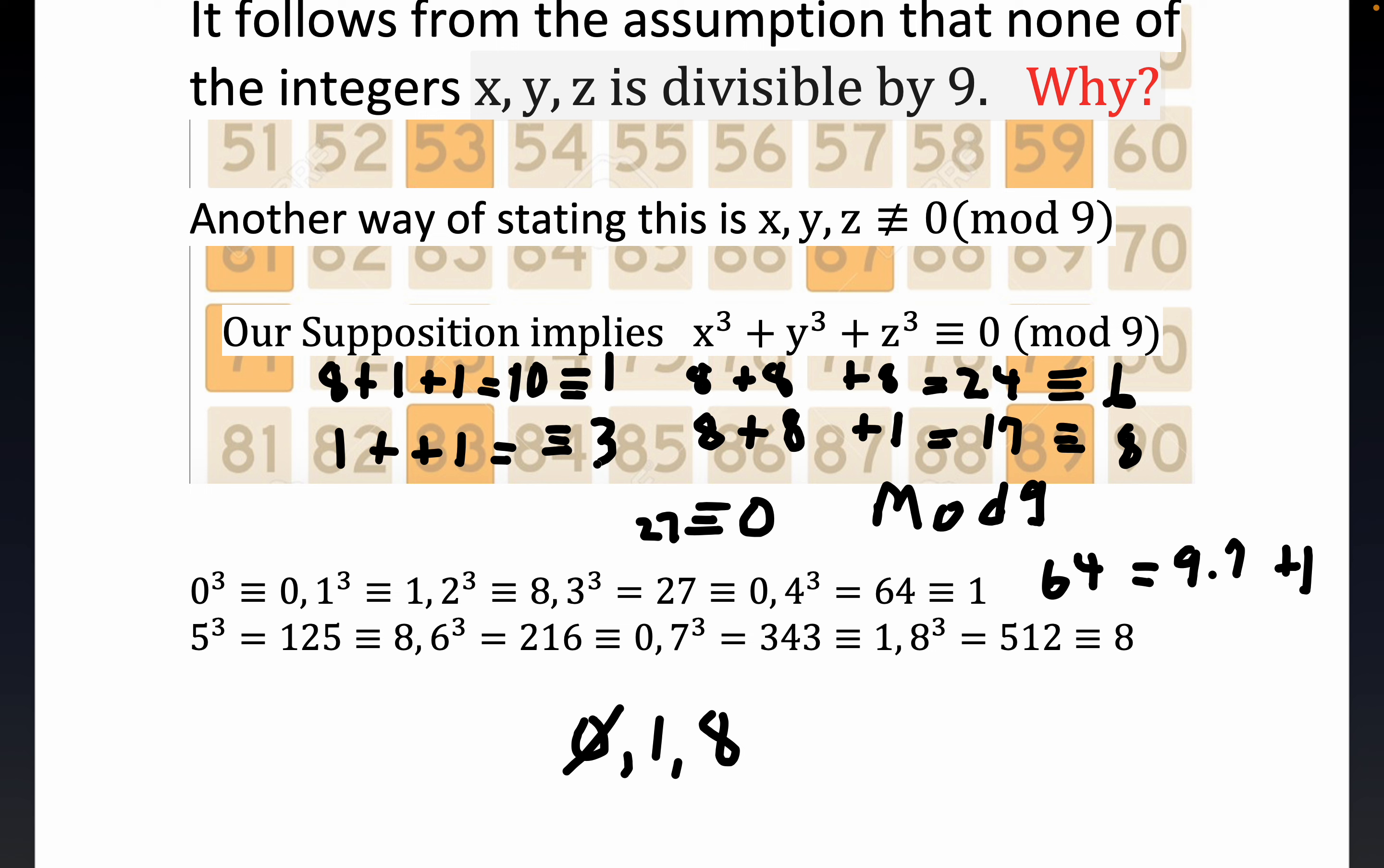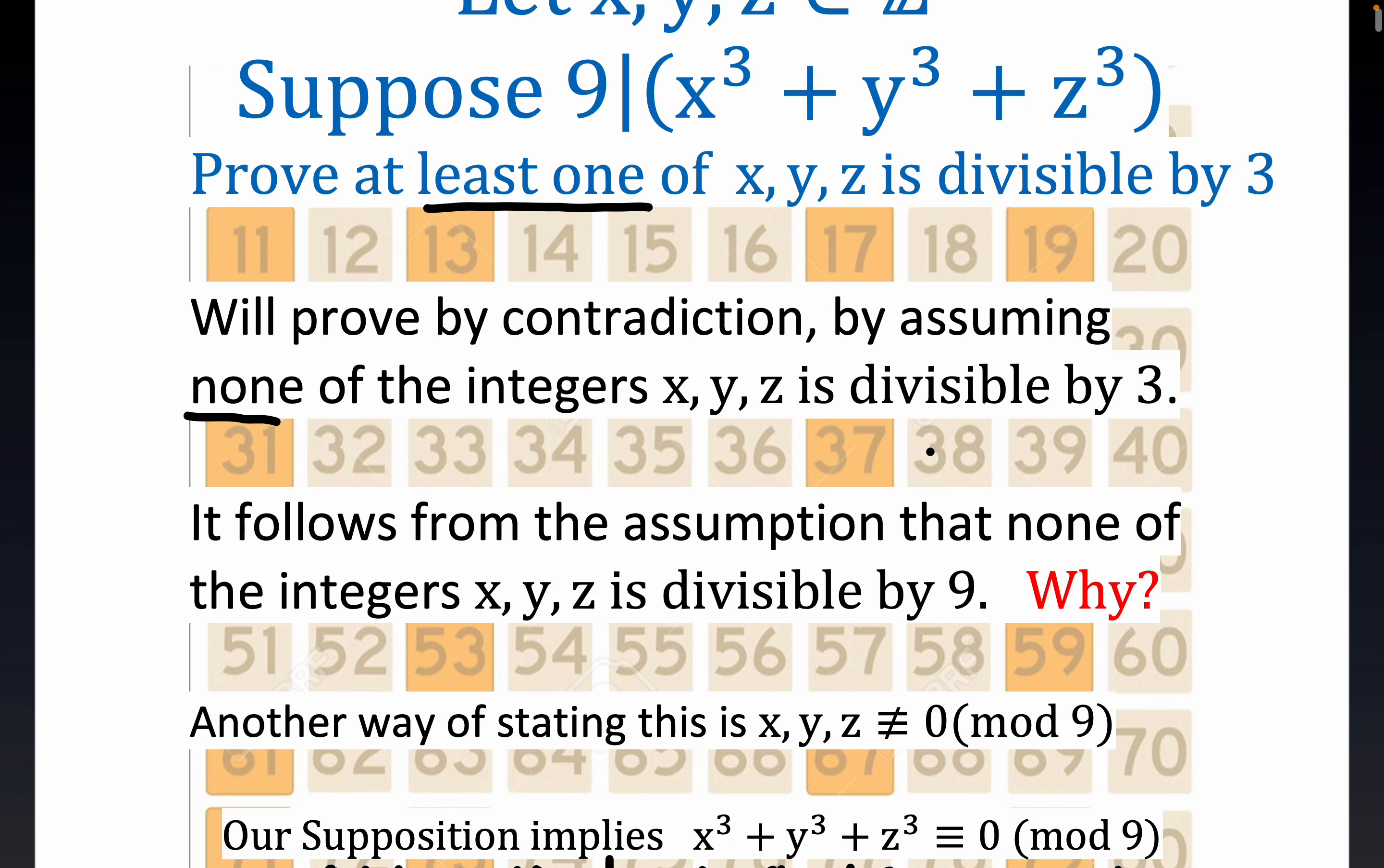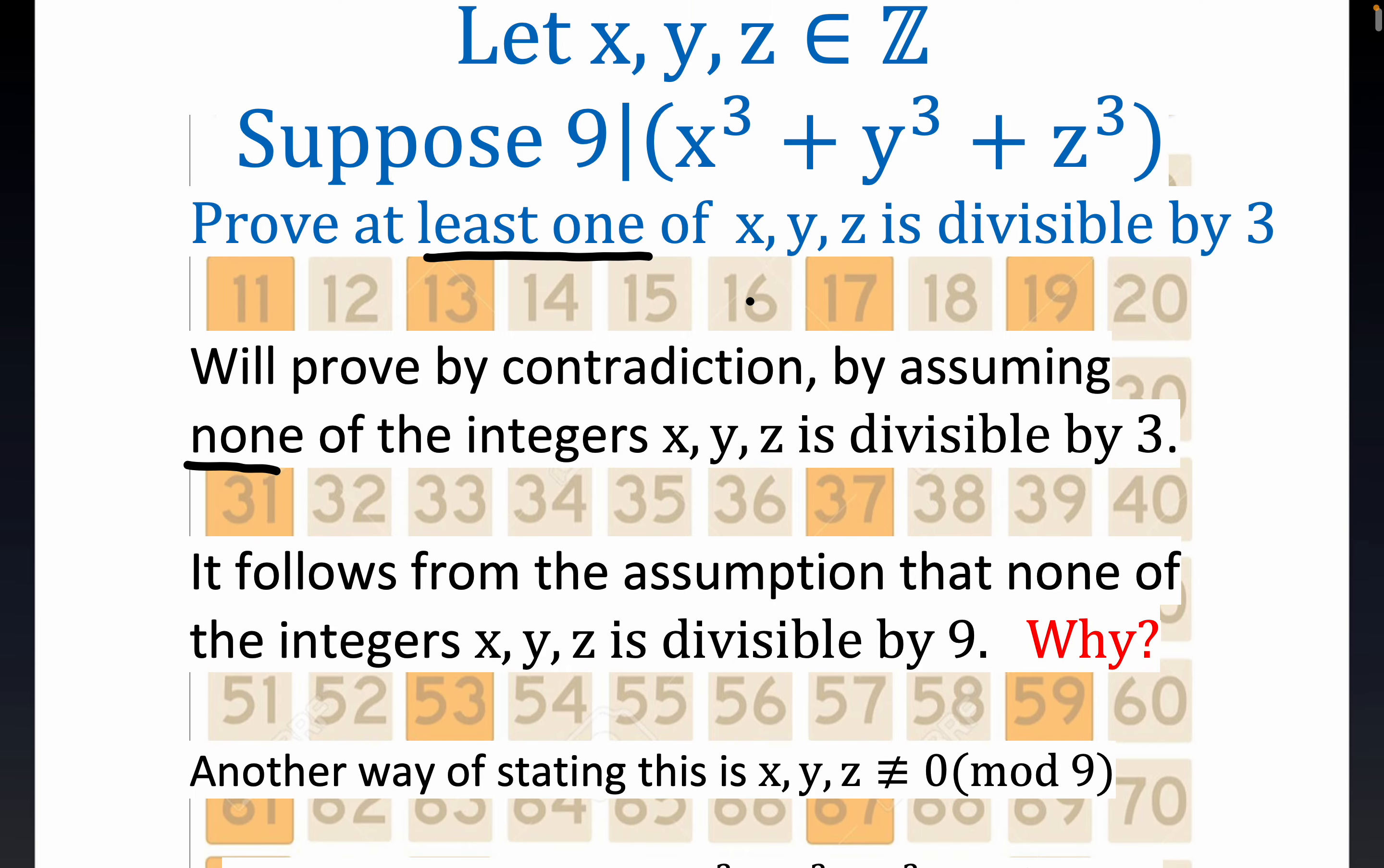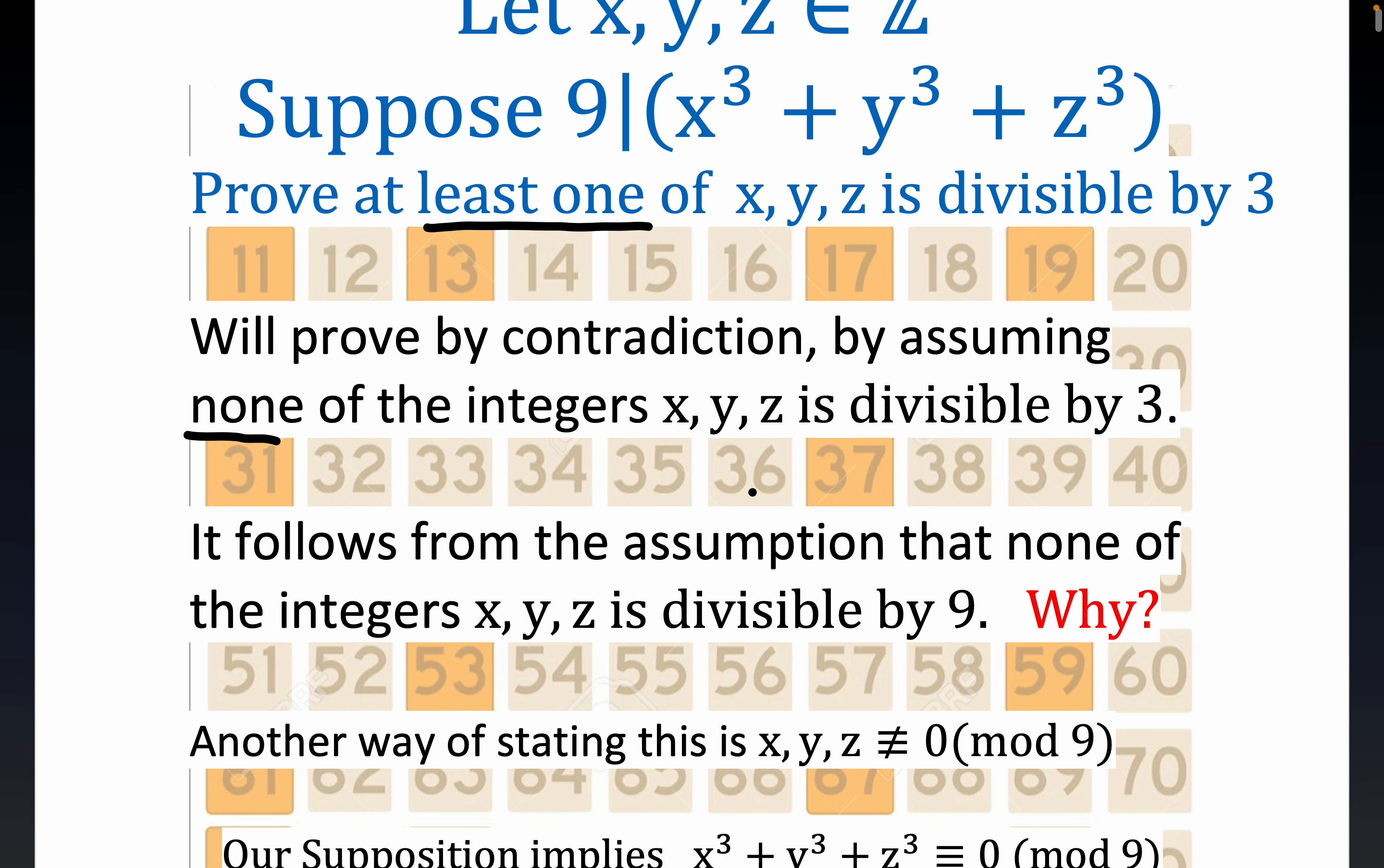So you see folks, all the combinations here of 1 and 8, ruling out 0 again, led to a circumstance that gave us a contradiction, right? We got again, we got 1, 3, 6, and 8, right? But we made the—our supposition implies, you know, we contradicted our original supposition here. See, we contradicted our original supposition. And so that means that it happened.